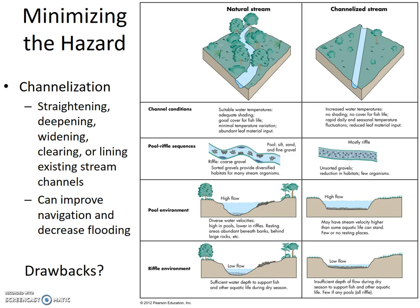Channelization is not without consequences. The image on the right compares features of a natural stream and a channelized stream. For a natural stream: suitable water temperatures, adequate shading, good cover for fish life, minimal temperature variations, and abundant leaf material input. For the channelized stream, conditions are quite different.